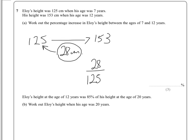125, and then you multiply that by 100 to give your answer as a percentage. So 28 over 125 times by 100 as a percentage, so that gives us 22.4%.